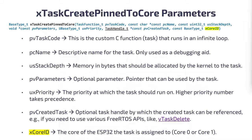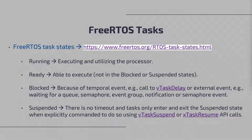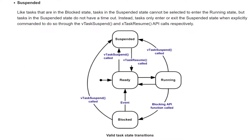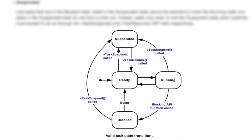xCoreID is the core of the ESP32 that the task is assigned to, which can be Core 0 or Core 1. This link will take you to a description of task states as well as a state transition diagram. The running state means the task is executing and utilizing the processor. The ready state means the task is able to execute but is not currently running because a task with equal or higher priority is currently running.